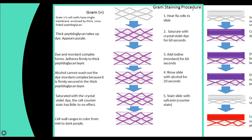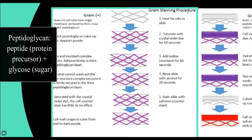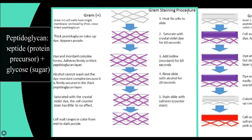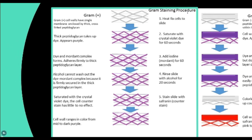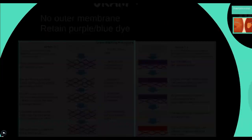Under gram stain, due to the peptidoglycan cell wall, the different proteins and sugars found in the bacterial wall allow the purple stain to set and not be washed away by an alcohol rinse when prepared on the slide.